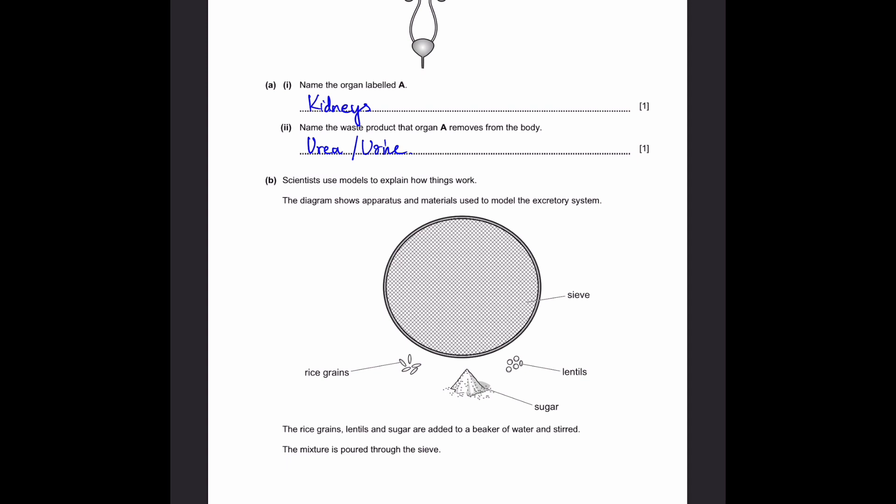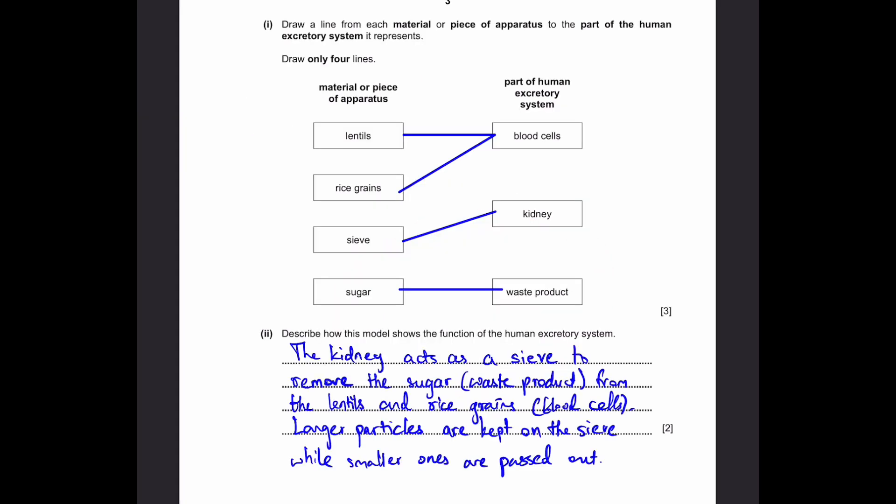Part B: Scientists use models to explain how things work. The diagram shows apparatus and materials used to model the excretory system. The rice grains, lentils, and sugar are added to a beaker of water and stirred. The mixture is poured through a sieve.